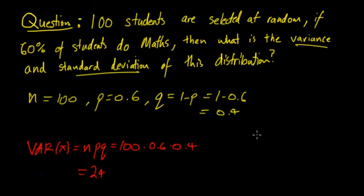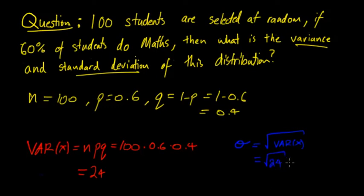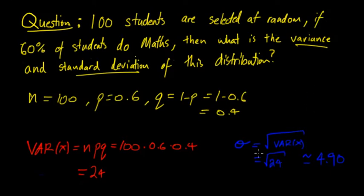We also have to calculate the standard deviation. The standard deviation is equal to the square root of the variance, so it equals the square root of 24. On a calculator, this is approximately 4.9. However, if you don't have a calculator or decimal places aren't required, you can simplify: taking out 4 as a square root gives us 2√6.